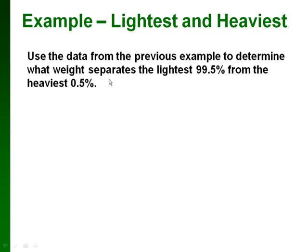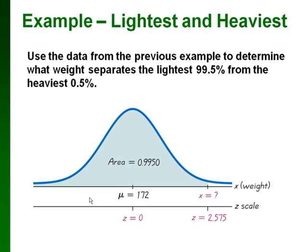So let's go back to the men's weights, and let's figure out what weight separates the lightest 99.5% of men from the heaviest 0.5%. So here's our picture. We have our mean of 172. Here's our area to the left is 0.9950. We're just converting this percentage to a decimal form.